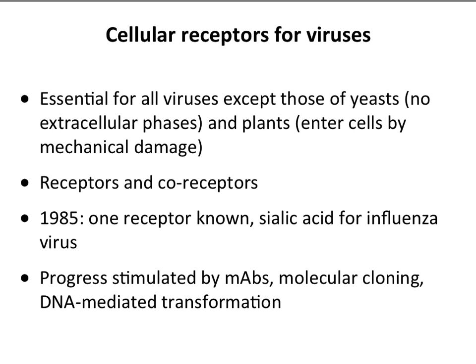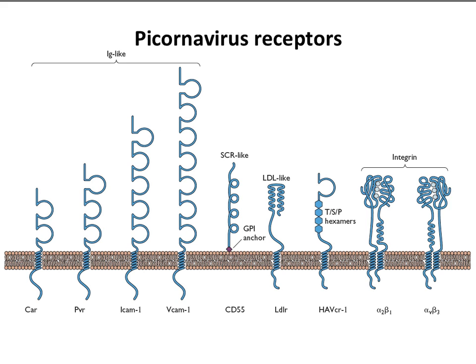As late as 1985 we only knew one virus receptor: sialic acid for influenza virus. Right after that year there was a lot of progress in the field — the availability of monoclonal antibodies, recombinant DNA technology, cloning, and DNA-mediated transformation all pushed the field forward. Now we know many many virus receptors and they seem to be identified every month.